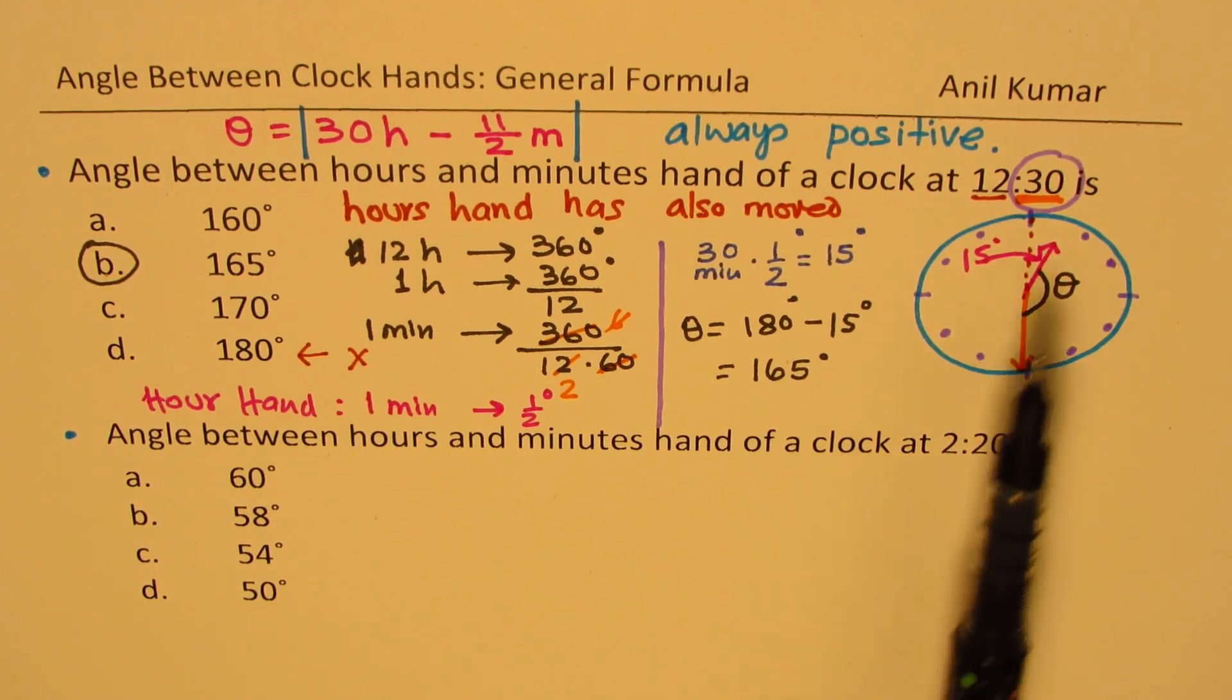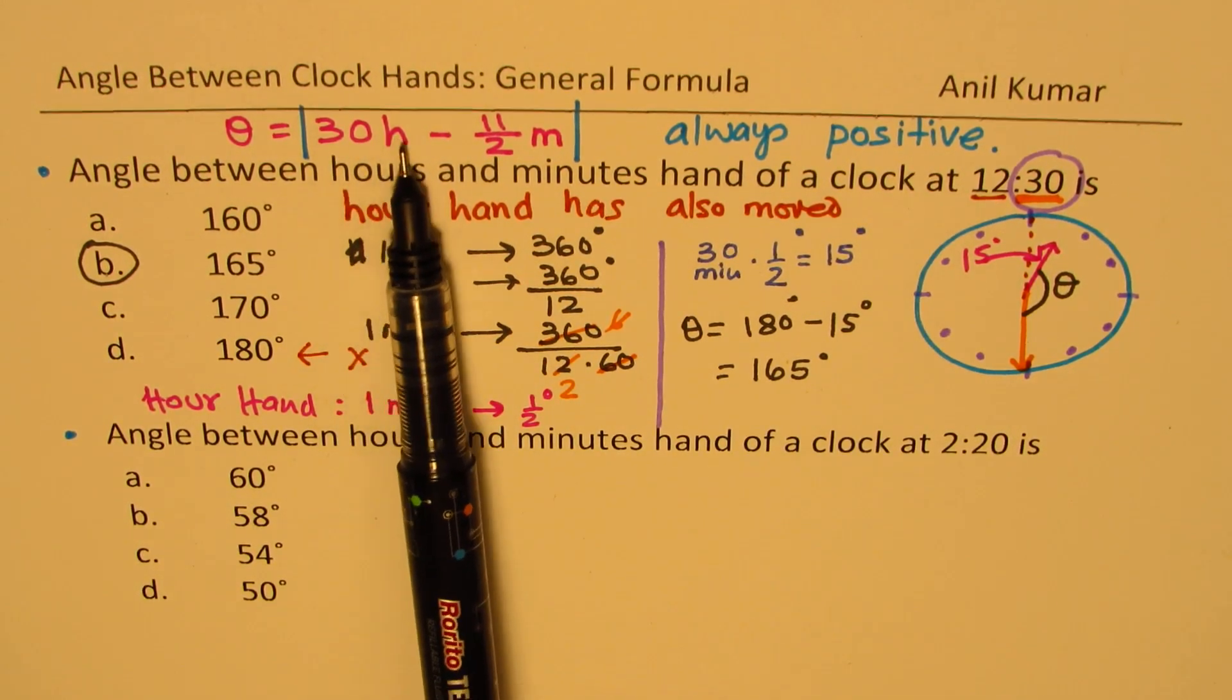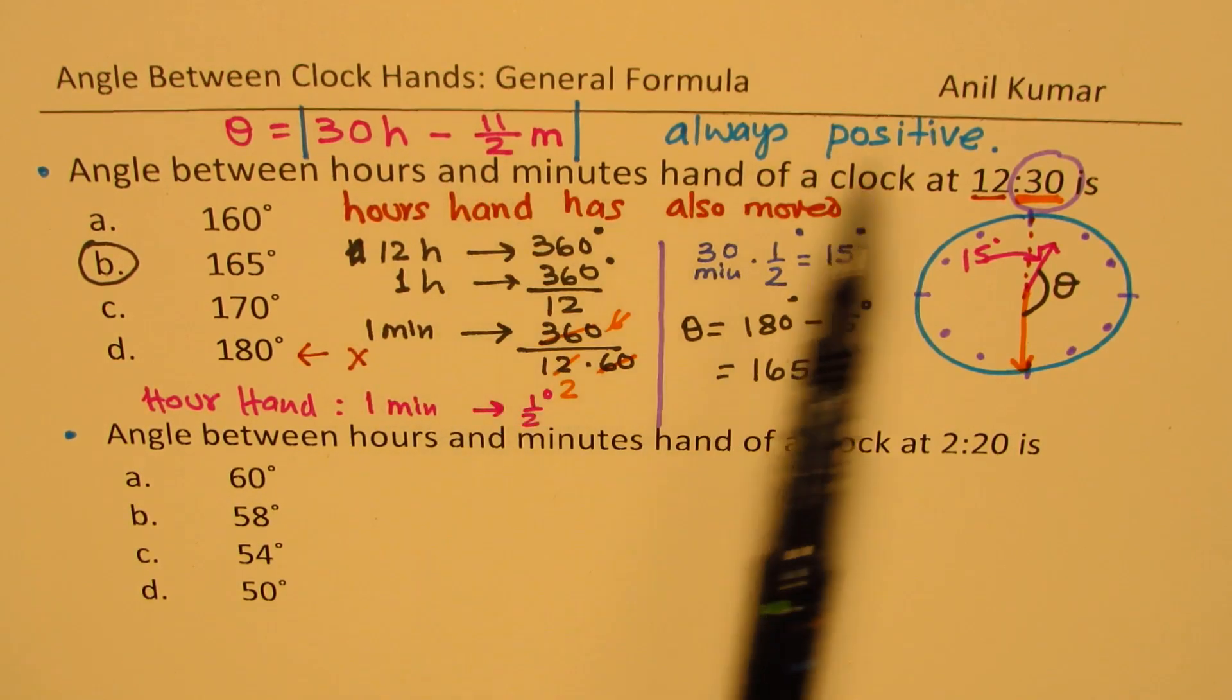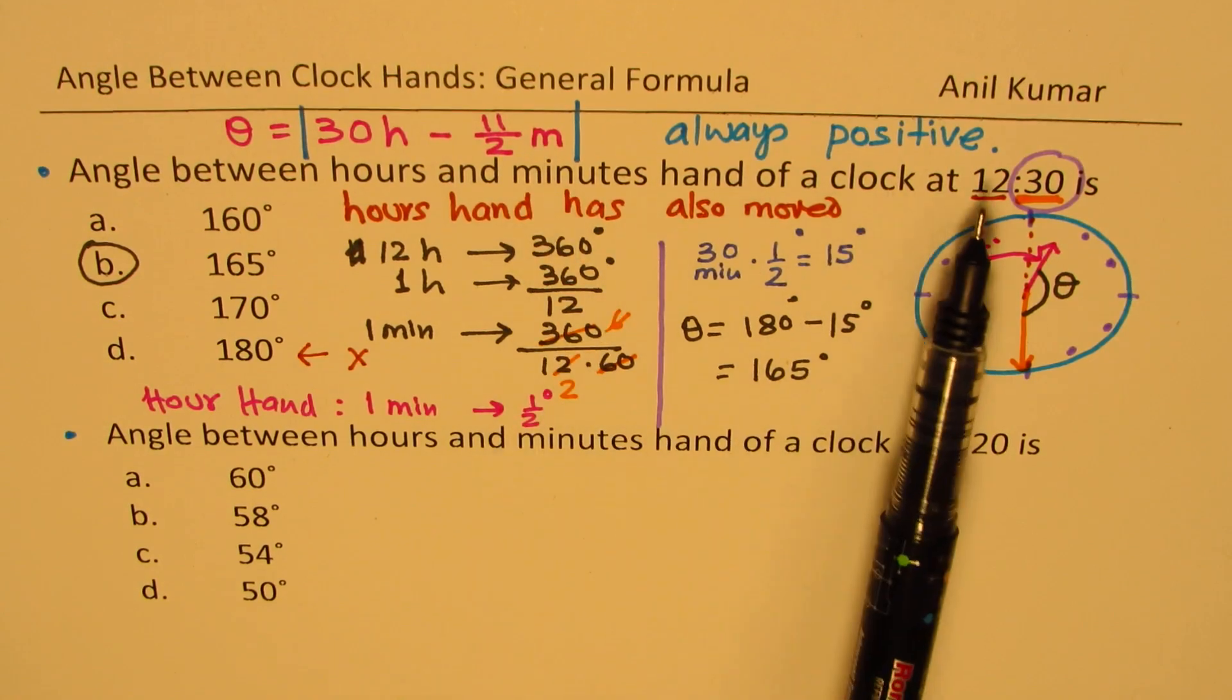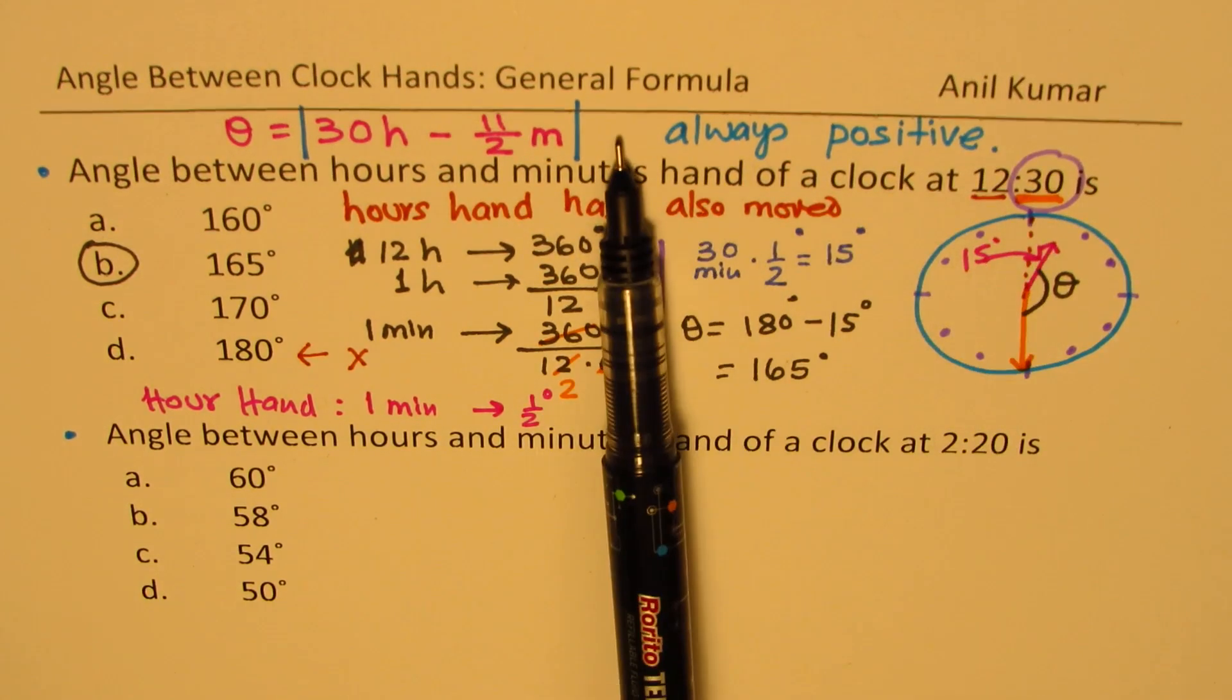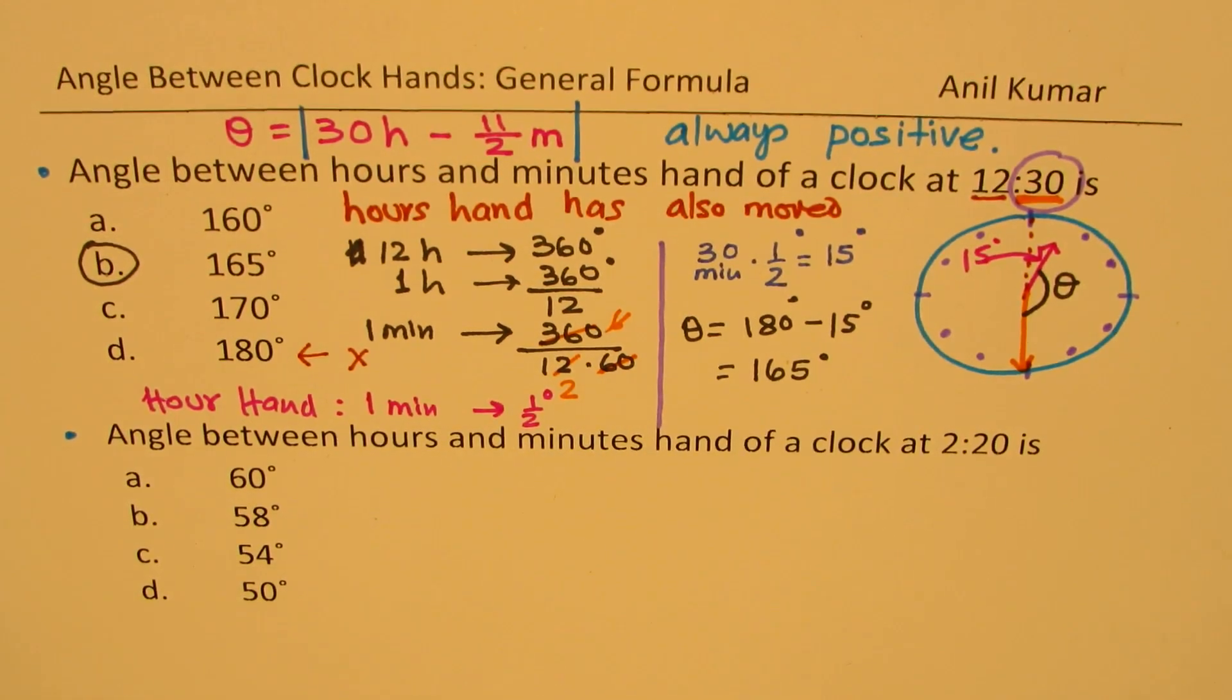Now, I'm not using formula, but you can plug in 30 times h minus 11 by 2 times 30 minutes. And then you'll get the same answer, 165.